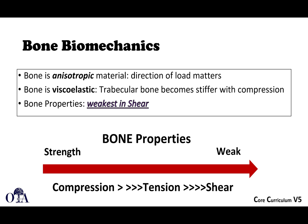Bone is also viscoelastic, so trabecular bone will become stiffer with compression. Bone is weakest in shear. Bone is basically strongest under compression loads, a little bit weaker when it comes to tension loads. So it's going to fail first under tension, then compression under the same amount of load, and it's the weakest under shear loads.